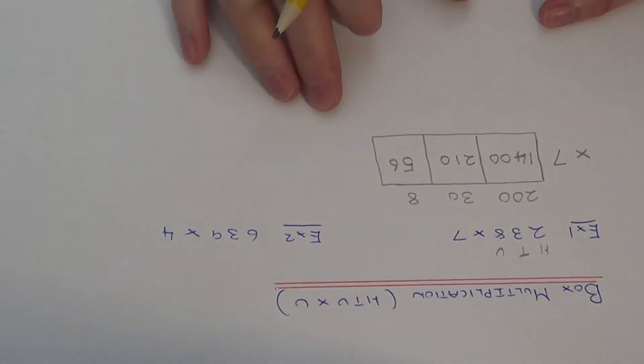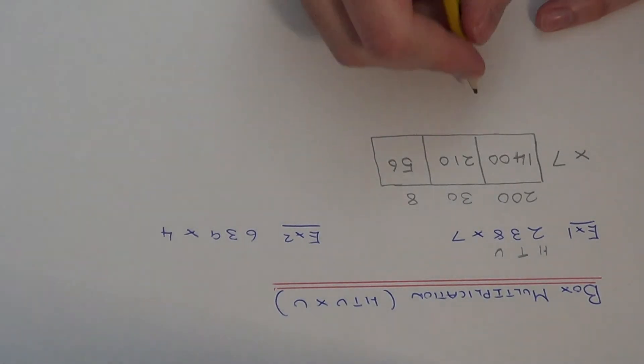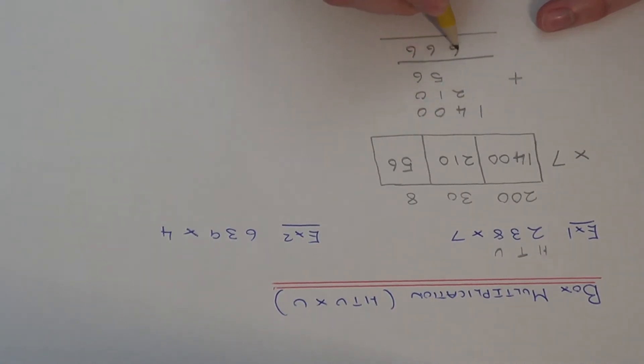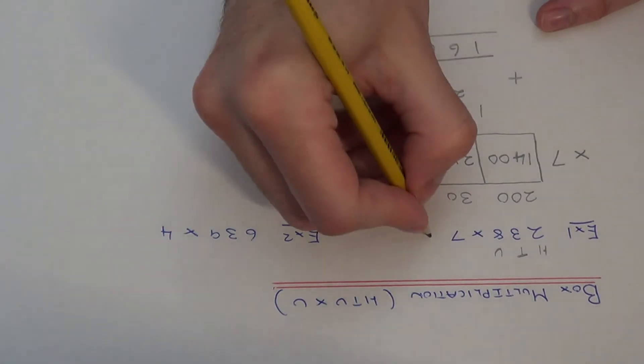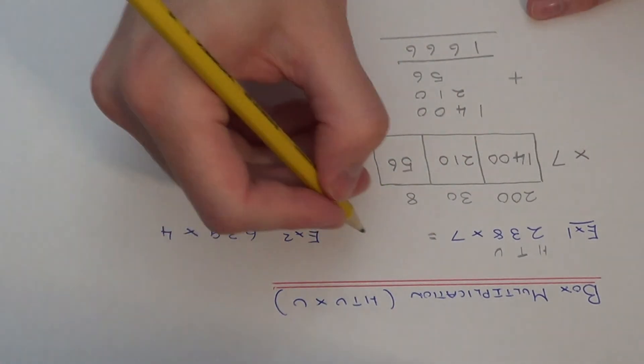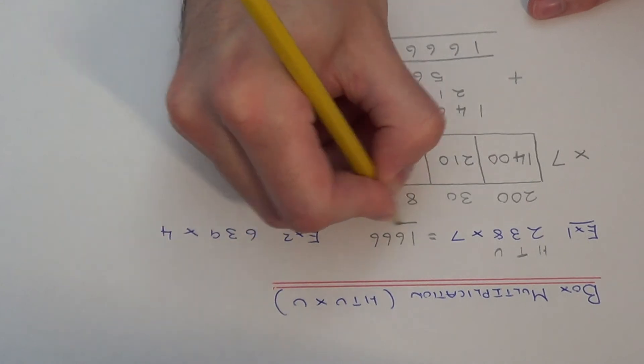Once you've got those three numbers, we just need to add those up. So 6, 6, 6 and 1. Our final answer is 1666.